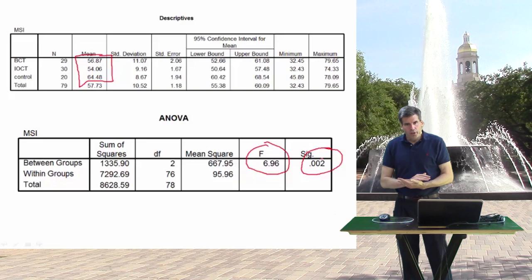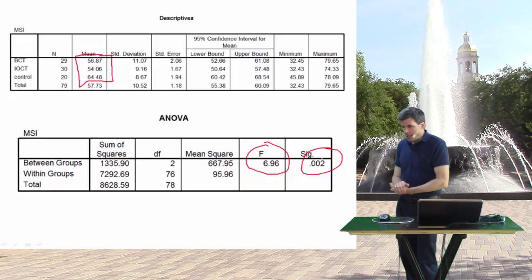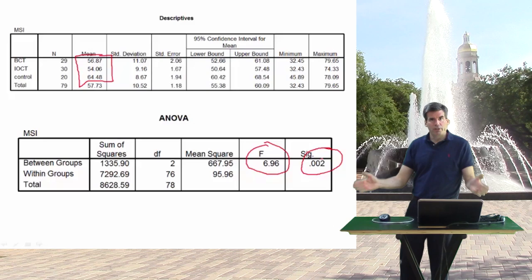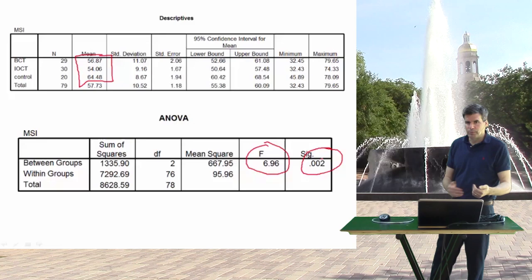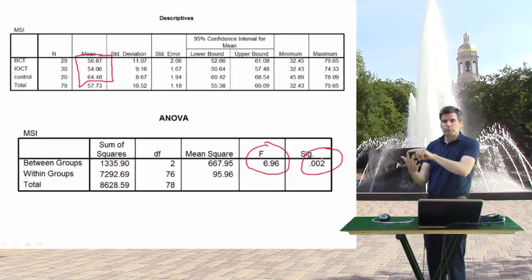There are a couple of ways we talked about to ask that focused question. One approach is to do what we call planned comparisons, and we talked about how we could do those planned comparisons with orthogonal contrasts. The key thing about a planned comparison is that we're not going to make all the possible comparisons we could make, but rather a subset of comparisons that we've set up ahead of time. The other approach is the post hoc analysis, where we just do all the possible comparisons — comparing group one with two, group one with three, and group two with three.